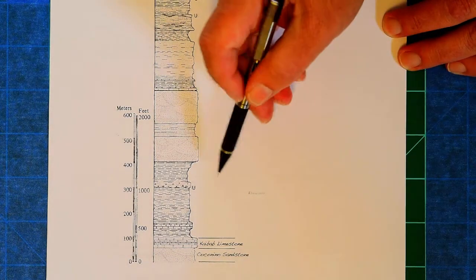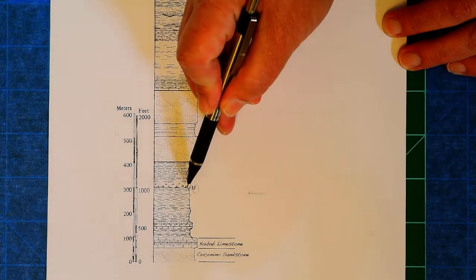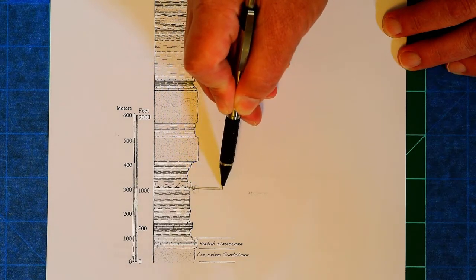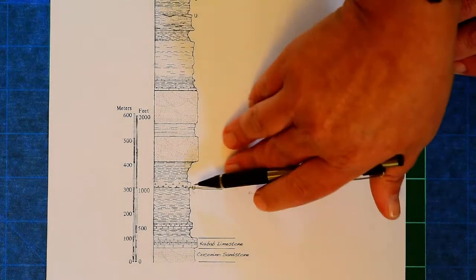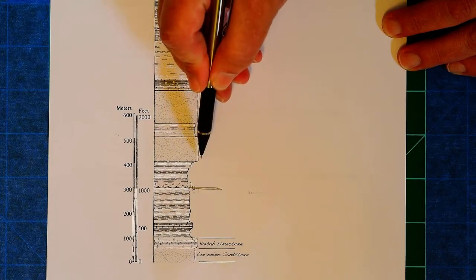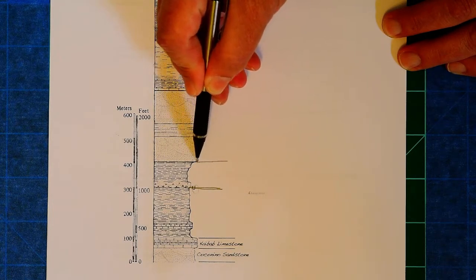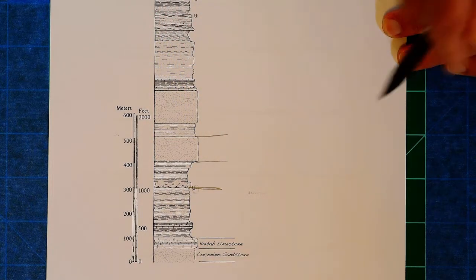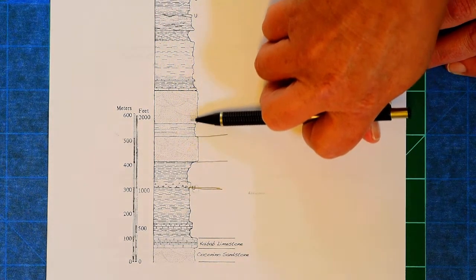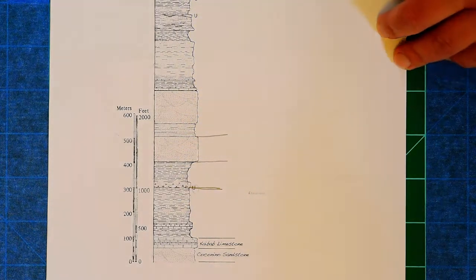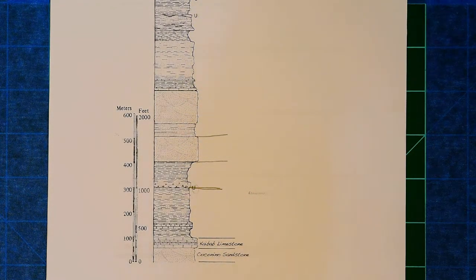When you see a U like that, that means there's an unconformity right there. So that would be a great place to break out a rock formation where there's an unconformity. Or another great place would be this very distinctive cross bedded sandstone right there. So you'll go up this stratigraphic section and break out the unique formations that you see.